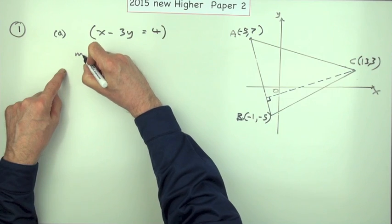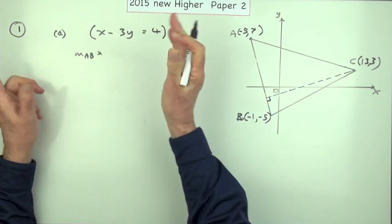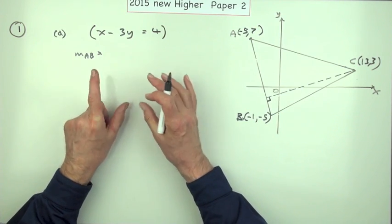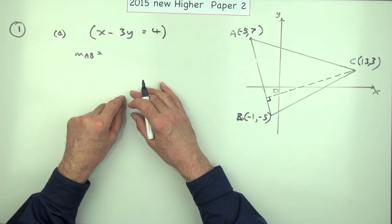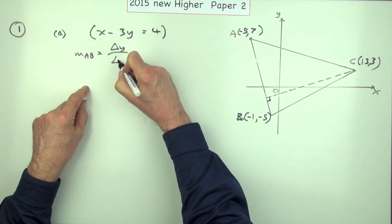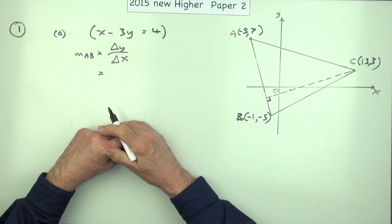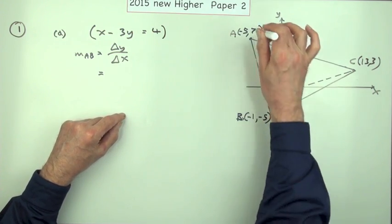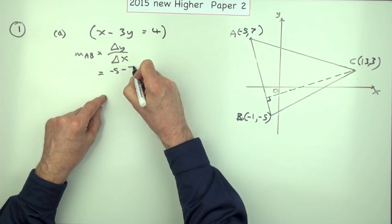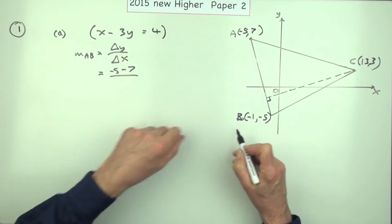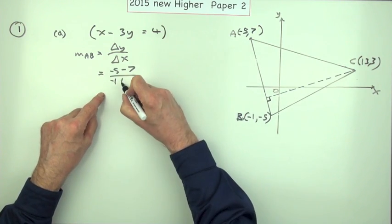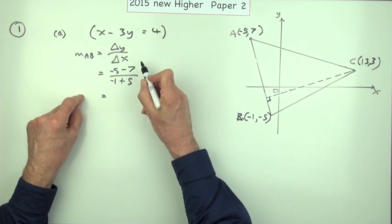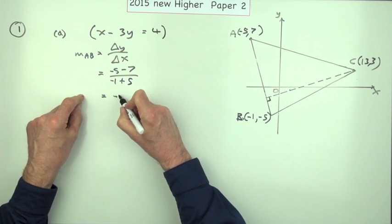The gradient of AB - there's only one mark for getting this gradient, so you can set it out whichever way you like: y2 minus y1 over x2 minus x1, or just the difference in y over the difference in x. So the difference in the y coordinates, that would be -5 take away 7, and the difference in x coordinates would be -1 take away -5, or I'll just go straight in with plus 5. So we've got -12 over 4, which is -3.